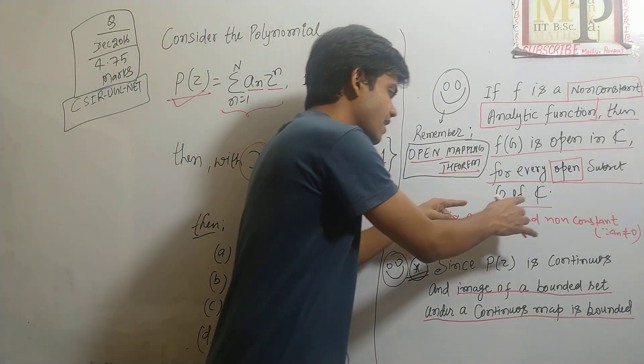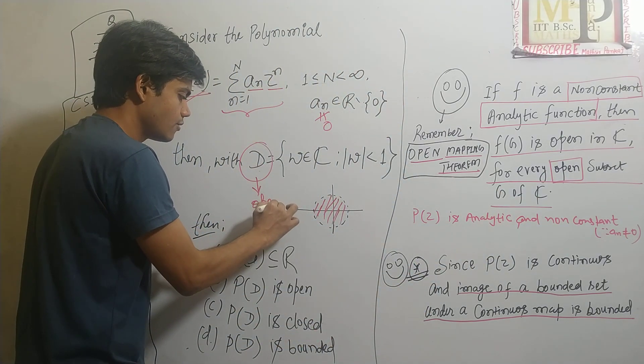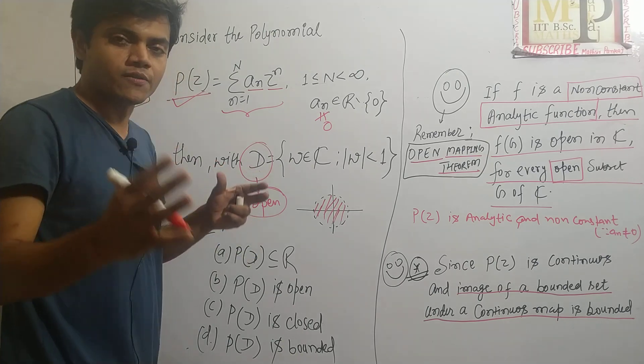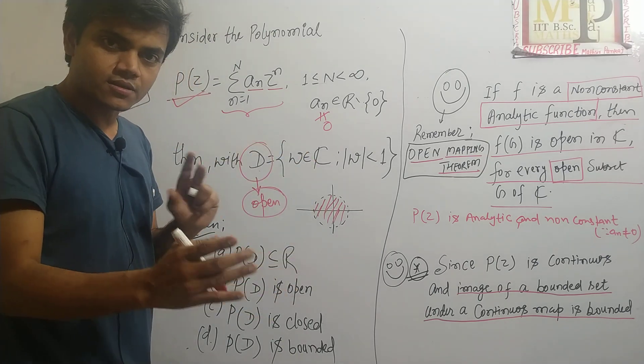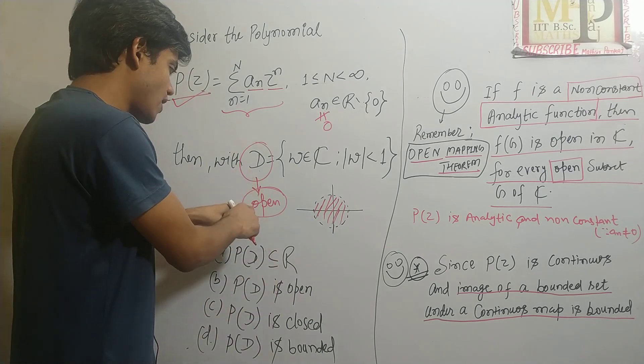So what can you say? Your P(z) is analytic and non-constant and your D is open. We have made a very beautiful lecture on open set in the playlist. You can go for that. So your D is an open set.